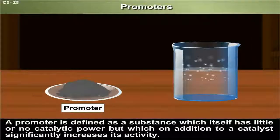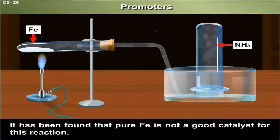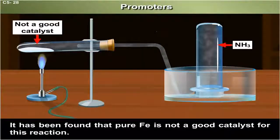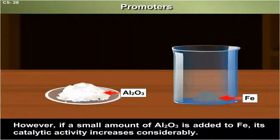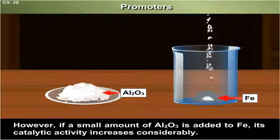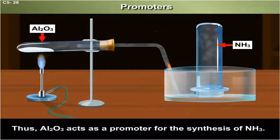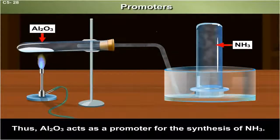For example, iron is used as a catalyst for ammonia synthesis. It has been found that pure iron is not a good catalyst for this reaction. However, if a small amount of aluminium oxide is added to iron, its catalytic activity increases considerably. Thus, aluminium oxide acts as a promoter for the synthesis of ammonia.